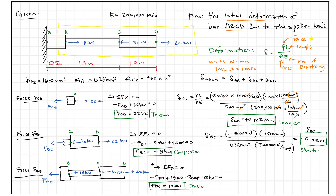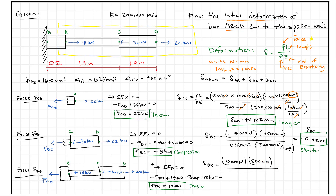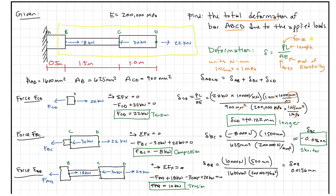For delta AB, substituting into PL over AE: 10,000 newtons times 500 millimeters, divided by 1,600 millimeters squared times 200,000 newtons per millimeter squared. Delta AB equals 0.0156 millimeters. Since this is in tension, the bar gets longer — consistent with our positive result.